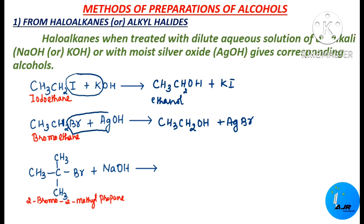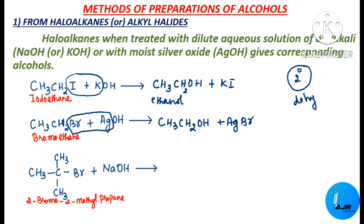Now the third example is a tertiary haloalkane. The first two examples were primary haloalkanes. When you treat a secondary haloalkane with an alkali, you will be getting an alkene as well as an alcohol. Dehydrohalogenation takes place for primary, secondary as well as tertiary haloalkanes.